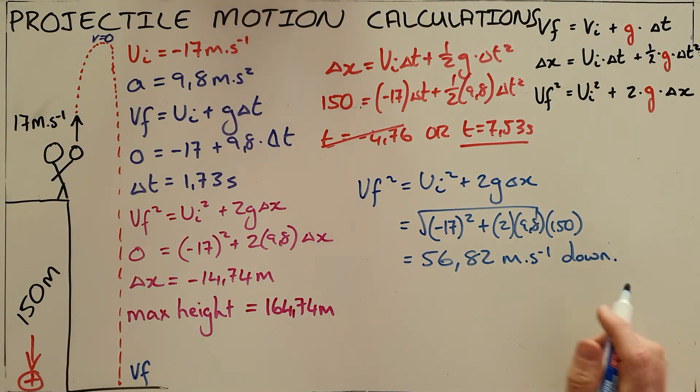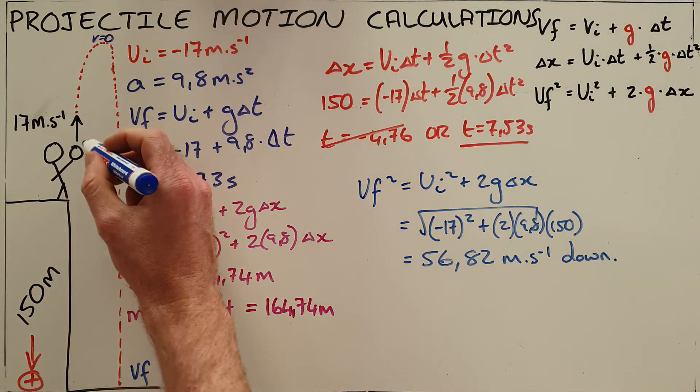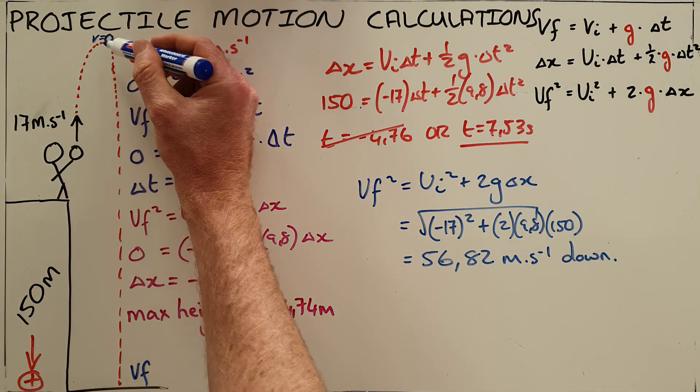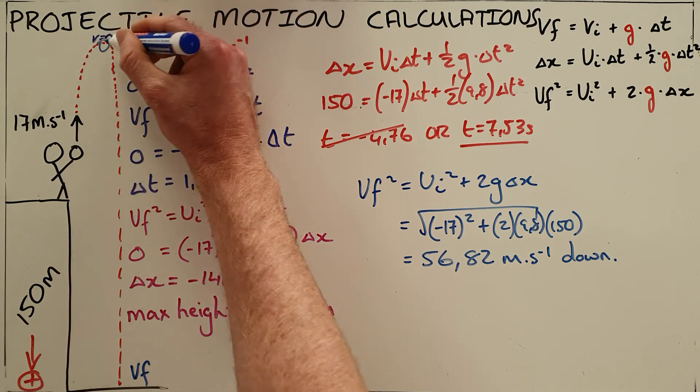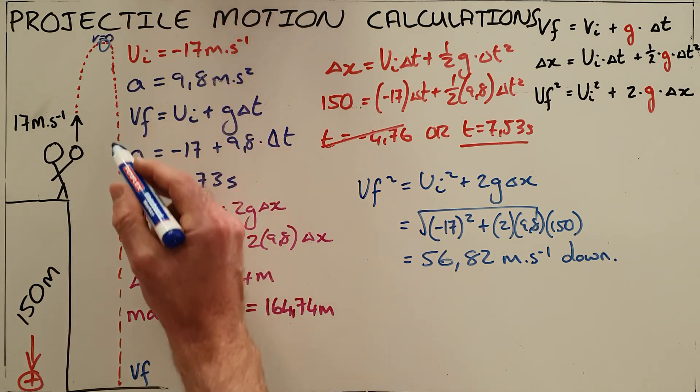There are a number of important things that we can take from this. The first is that the amount of time the object takes to reach its maximum height will always be equal to the amount of time the object takes to return to its starting point.